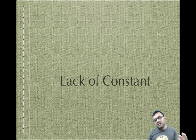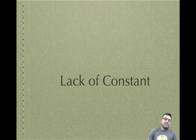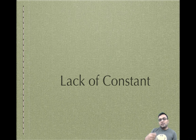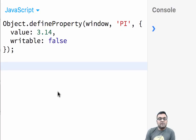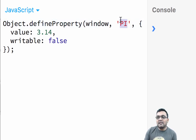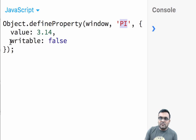Another issue overall is that until around 2015, there was no good way to define a constant. VAR lets you change the value at any time, but in programming you need constants like pi where the value cannot change. In ES5 or older JavaScript you had to use Object.defineProperty, define a variable name 'pi', give it a value, and set writable equal to false.